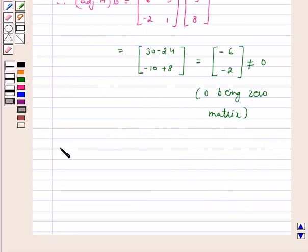Therefore, adjoint A into B is not equal to 0. This implies